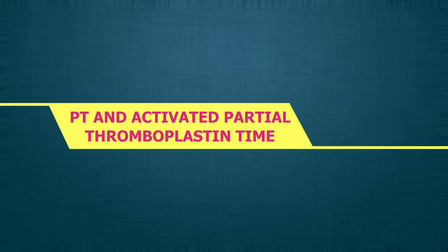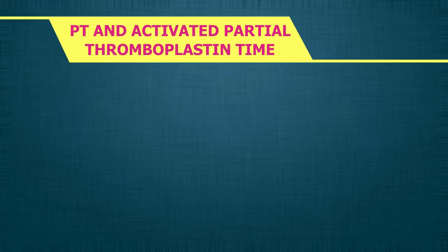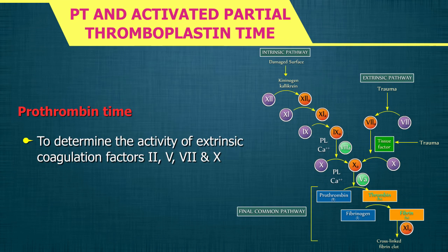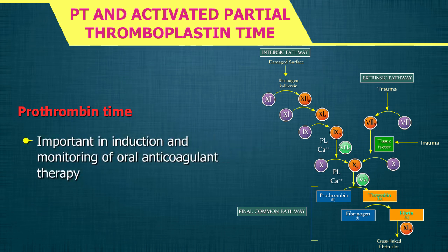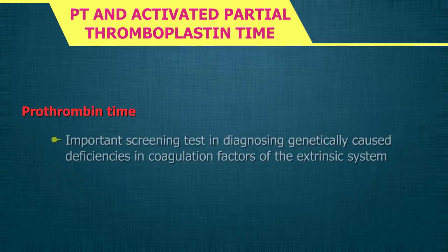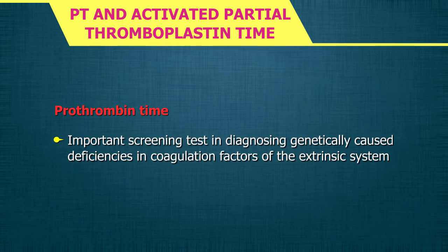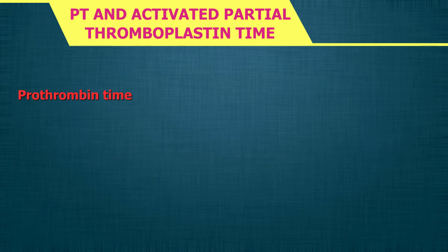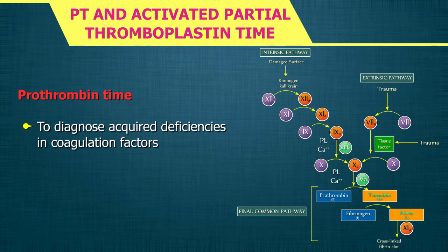Prothrombin time (PT) and activated partial thromboplastin time (APTT). PT is used to determine the activity of extrinsic coagulation factors 2, 5, 7, and 10. The PT test is important in the induction and monitoring of oral anticoagulant therapy. It is an important screening test in diagnosing genetically caused deficiencies in coagulation factors of the extrinsic system, used to diagnose acquired deficiencies, and also to check the synthesis performance of the liver in hepatic diseases.